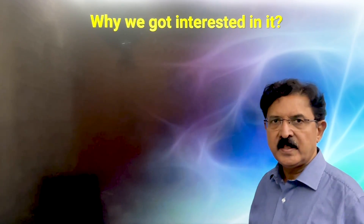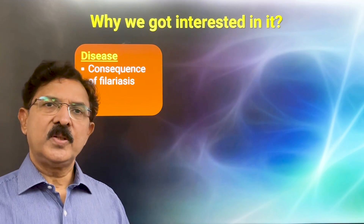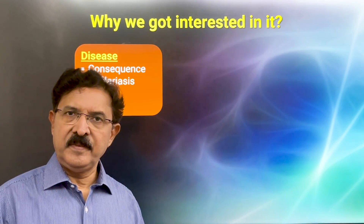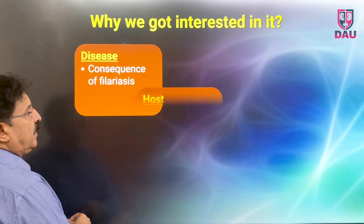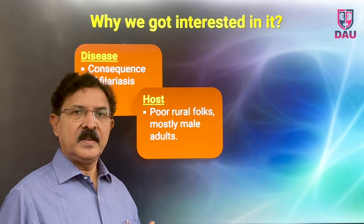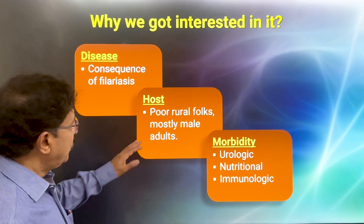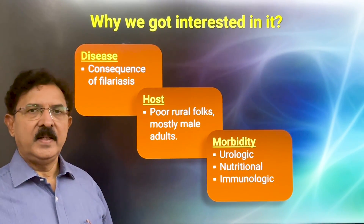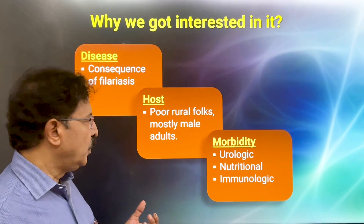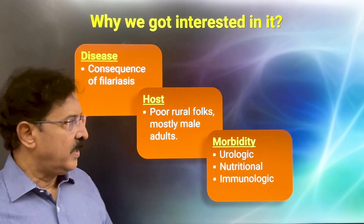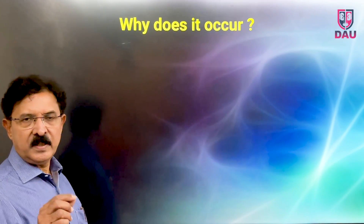Why did we get interested in this disease? First of all, chyluria is a consequence of lymphatic filariasis that is rife in our country, and we see all shades of the disease — so it was a huge burden for us to treat. The sufferers are our poor rural folks, mostly male adults, and to them this disease gives morbidity which is not only urological but also nutritional and immunological morbidity. So we had our reasons to be interested in this disease and therefore we looked into it with penetrating eyes.